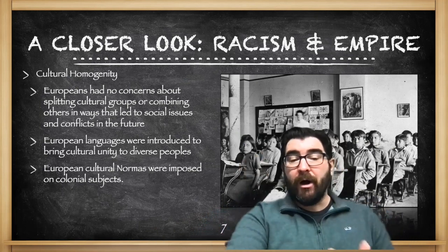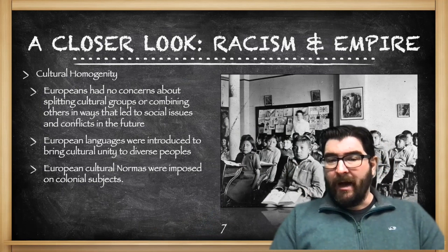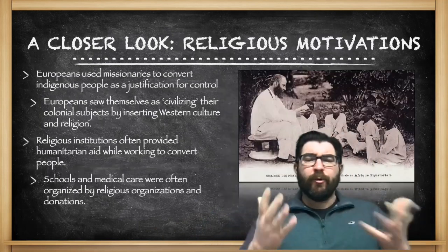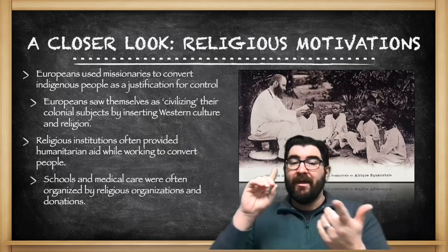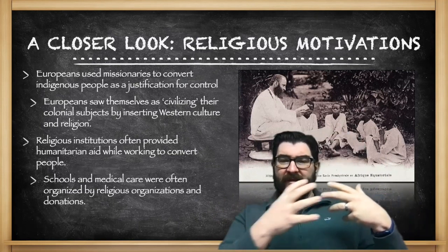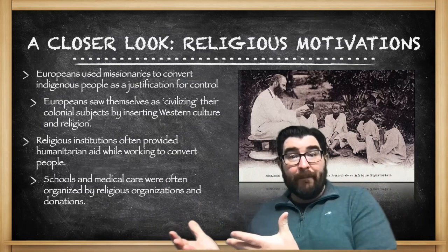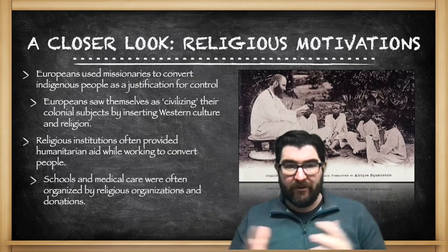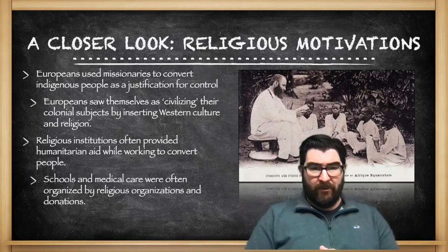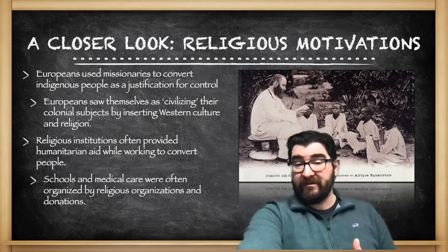European cultural norms were also imposed on colonial subjects. Here we see an image of a school for Native American children trying to indoctrinate the natives into Western white American culture. There were also religious motivations surrounding imperialism. Europeans used missionaries to convert indigenous people as a justification for control, seeing it as a way of civilizing colonial subjects. Religious institutions did, however, provide humanitarian aid — many schools and hospitals in colonial territories were organized by religious organizations.